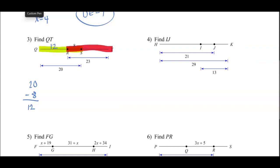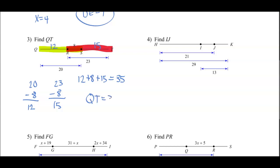RT is 23, and 23 minus 8 — because we can take that 8 out — gives us 15. So this piece is 15. What is the measure of QT? We're going to add these all up: 12 plus 8 plus 15, and that gives us 35. So QT is 35.